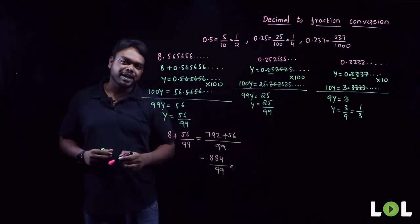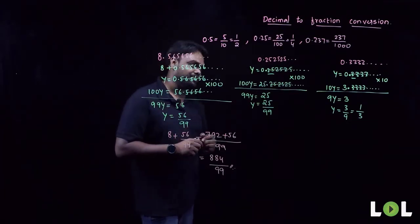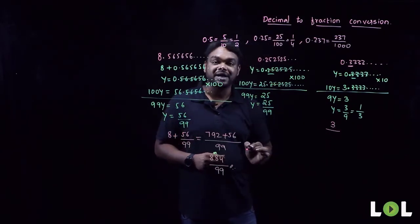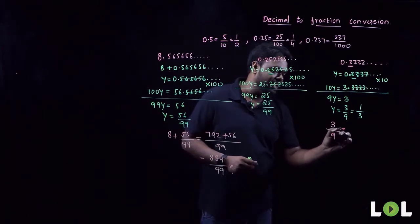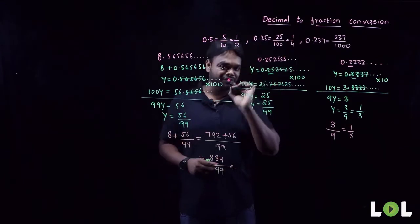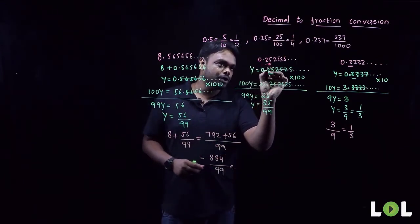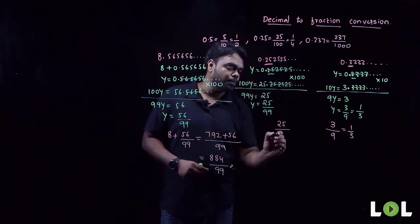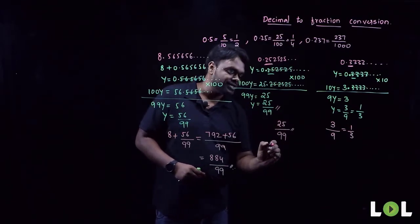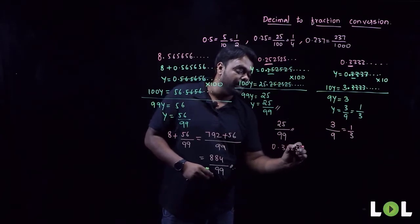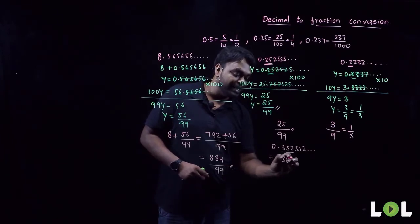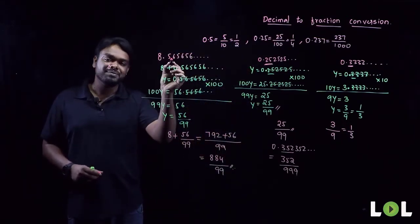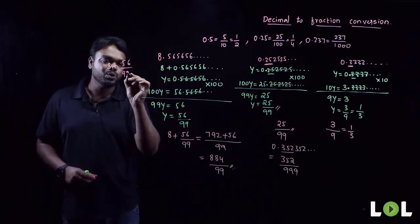Should you really do all that work every time? No — here is a simpler shortcut. For 0.3333: one digit is recurring, so write 3 in the numerator, divided by one 9 in the denominator — answer is 1/3. For 0.252525: two digits recurring (25), write 25 in the numerator divided by two 9s (99) — same answer 25/99. For 0.352352: three digits recurring (352), write 352 over three 9s (999). For 8.565656: write 8 plus 56/99 — absolutely the same result.